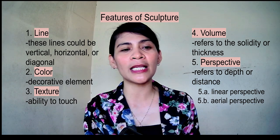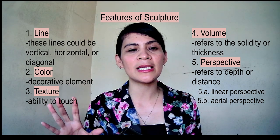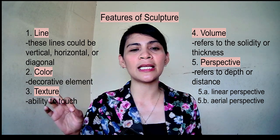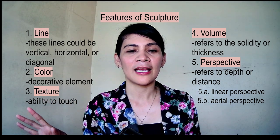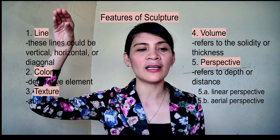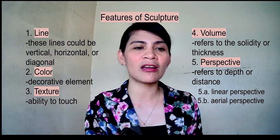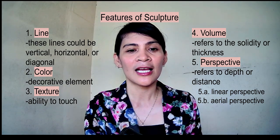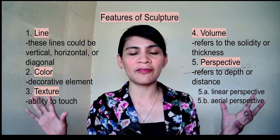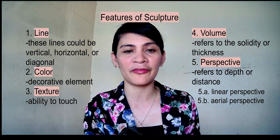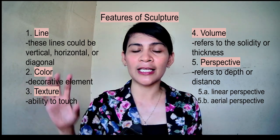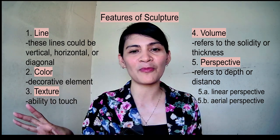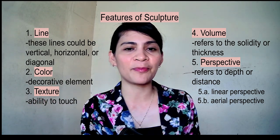Linear perspective means that figures become smaller as they recede into the distance. Aerial perspective means that the figure becomes fainter or less visible in the distance — this perspective is due to the atmosphere's effect. So if we can still see the figure clearly, that is aerial perspective; if the figure becomes smaller, it is linear perspective.